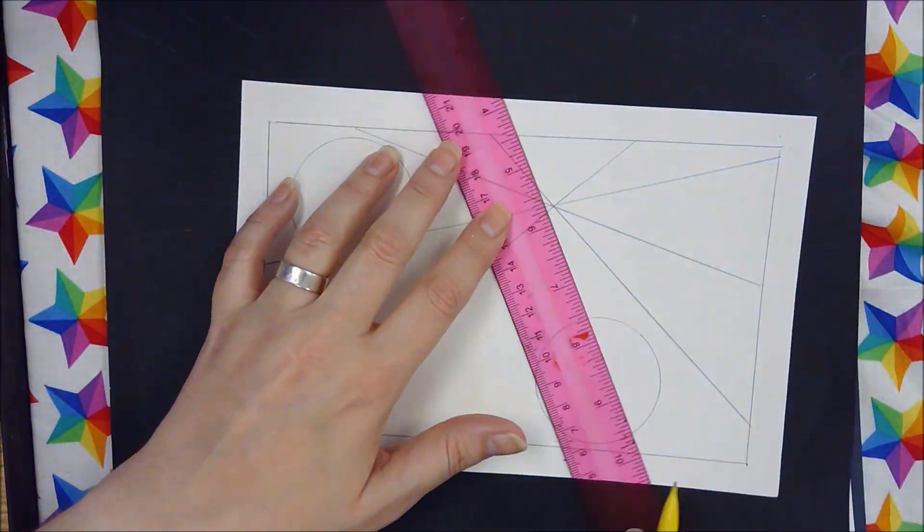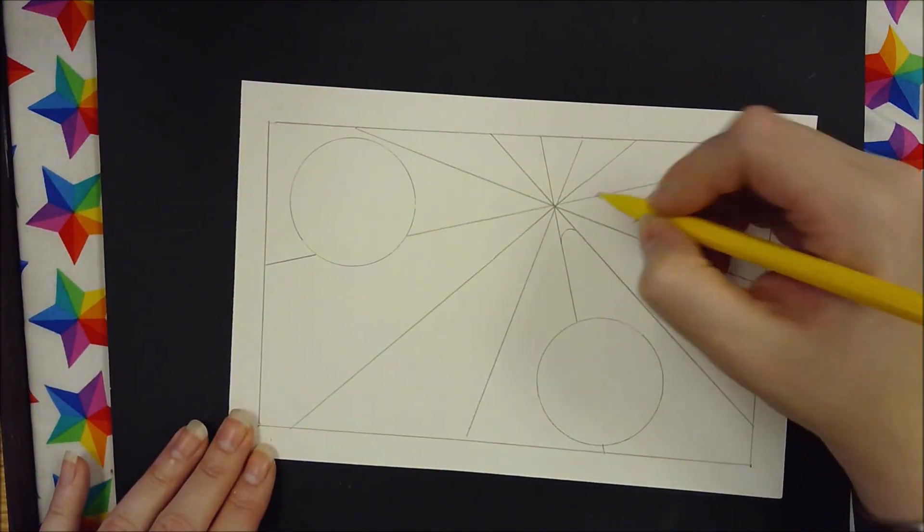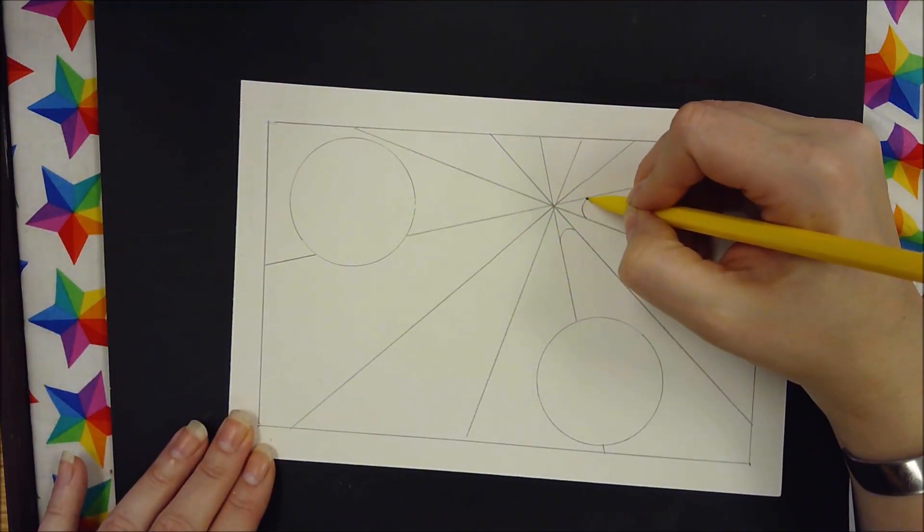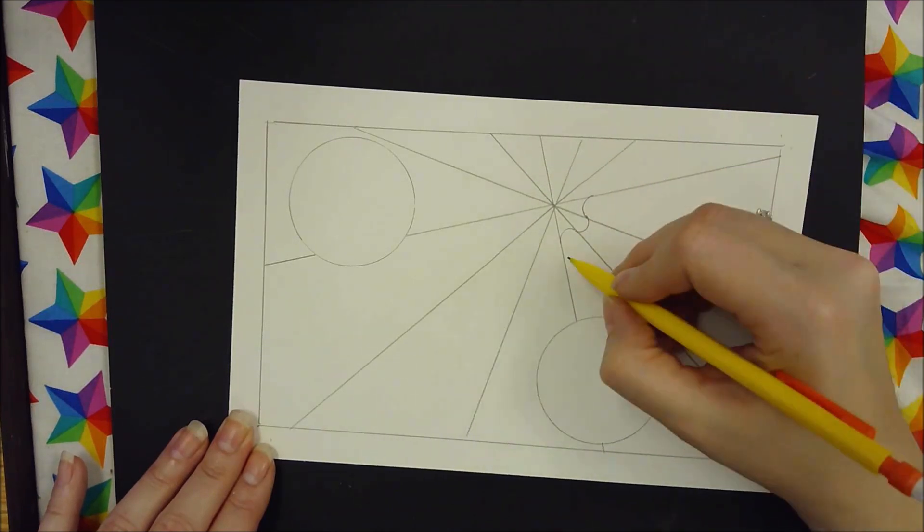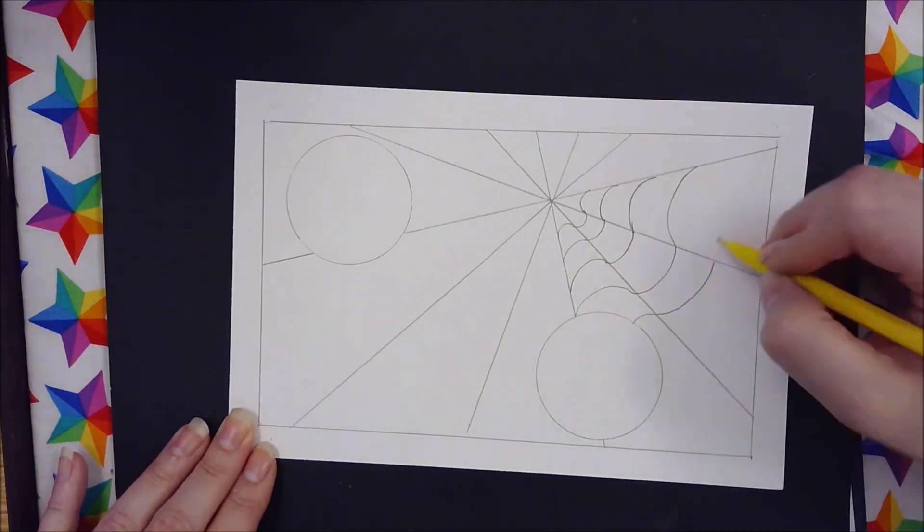Now using a ruler, make sure all your lines crisscross in the middle. And once you're done with the ruler, we're going to add our curved lines, our rainbow lines, and our smile lines. Give each one a space and go ahead and fill them in with rainbows and curves.